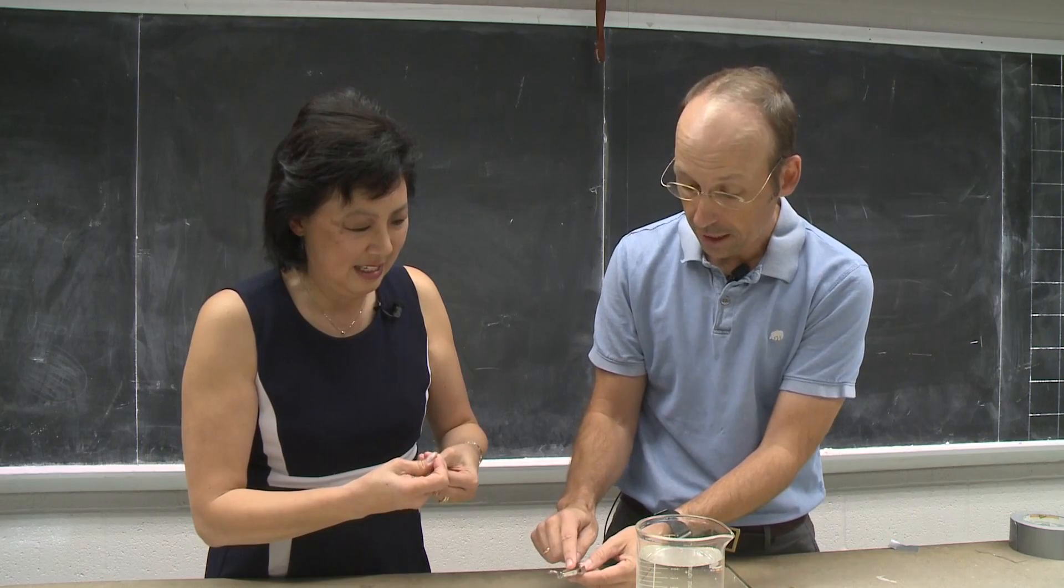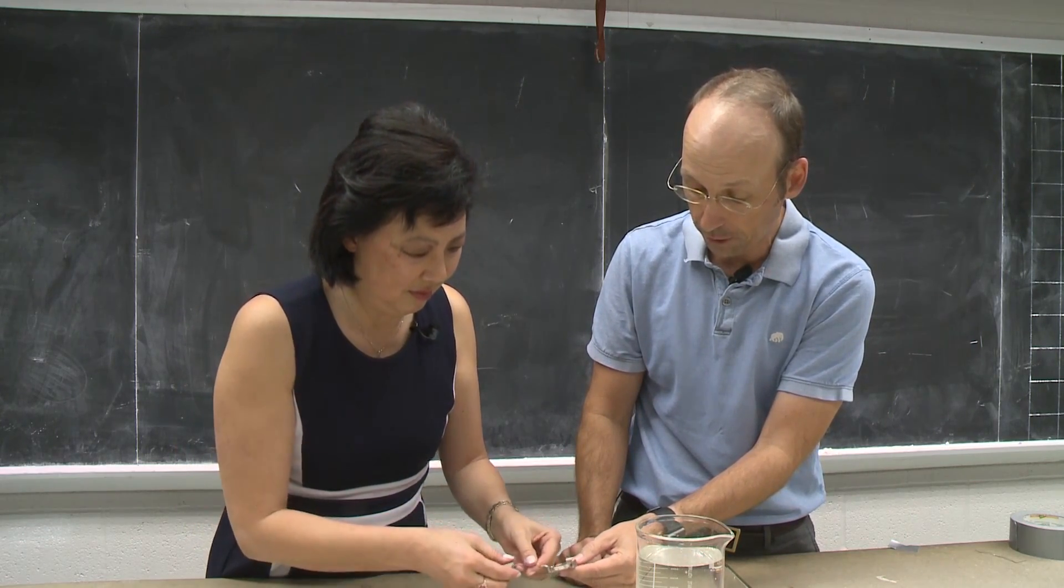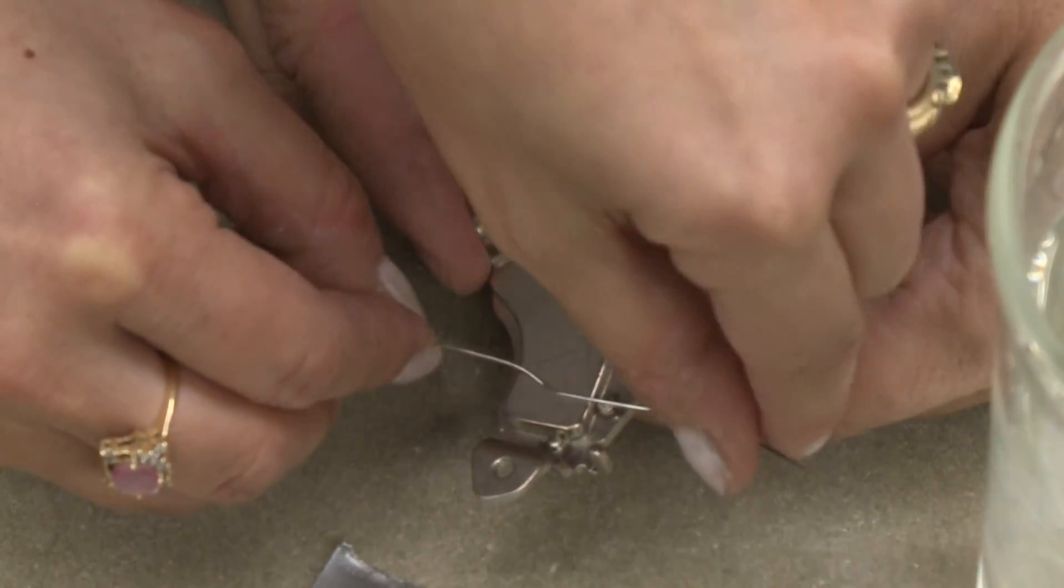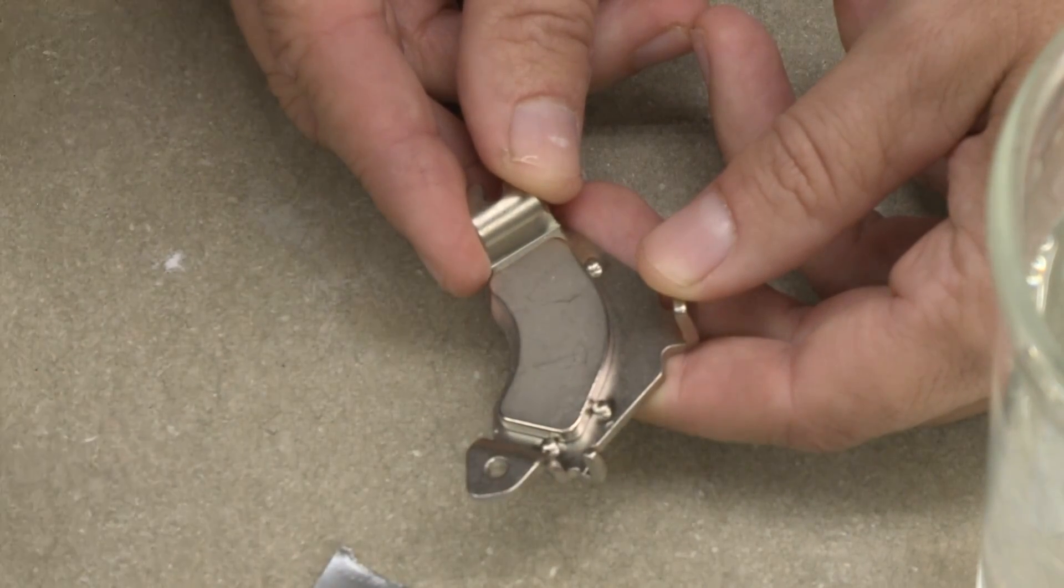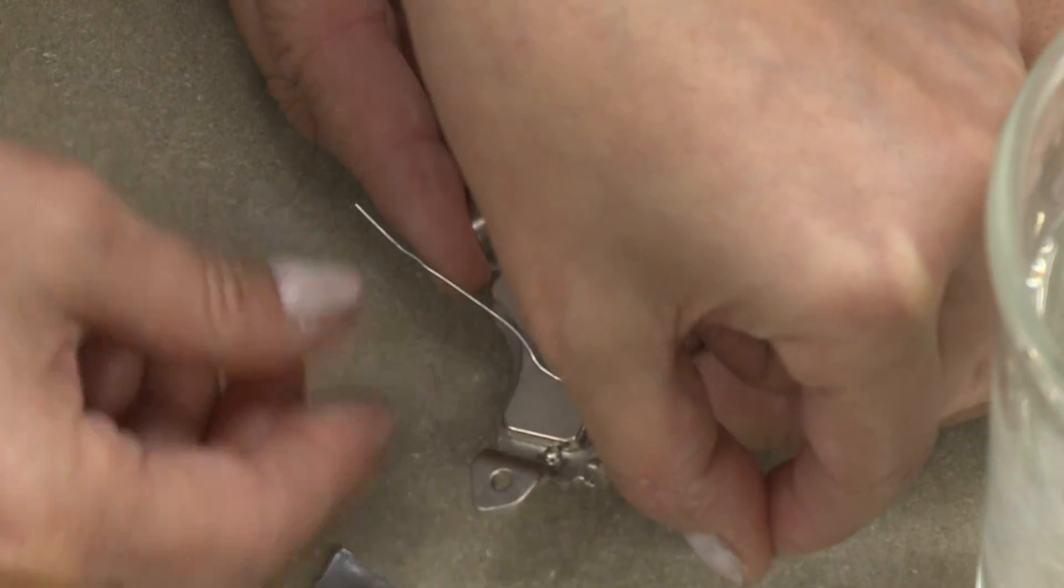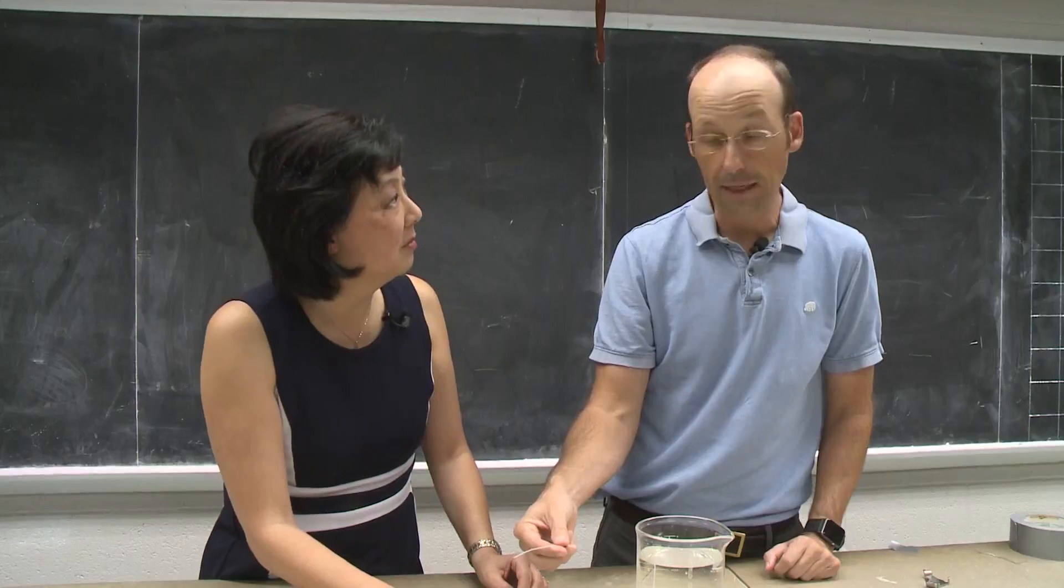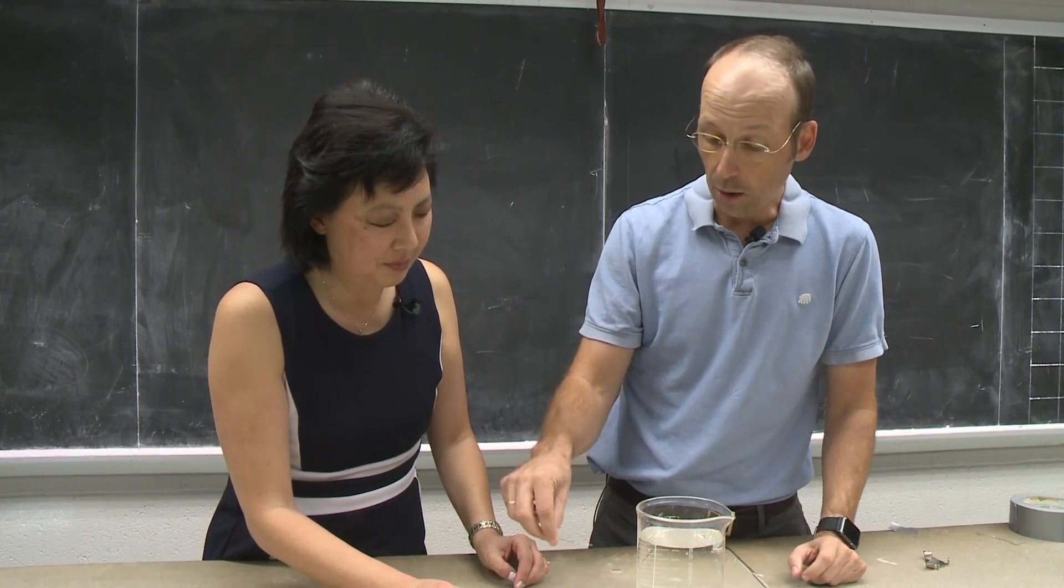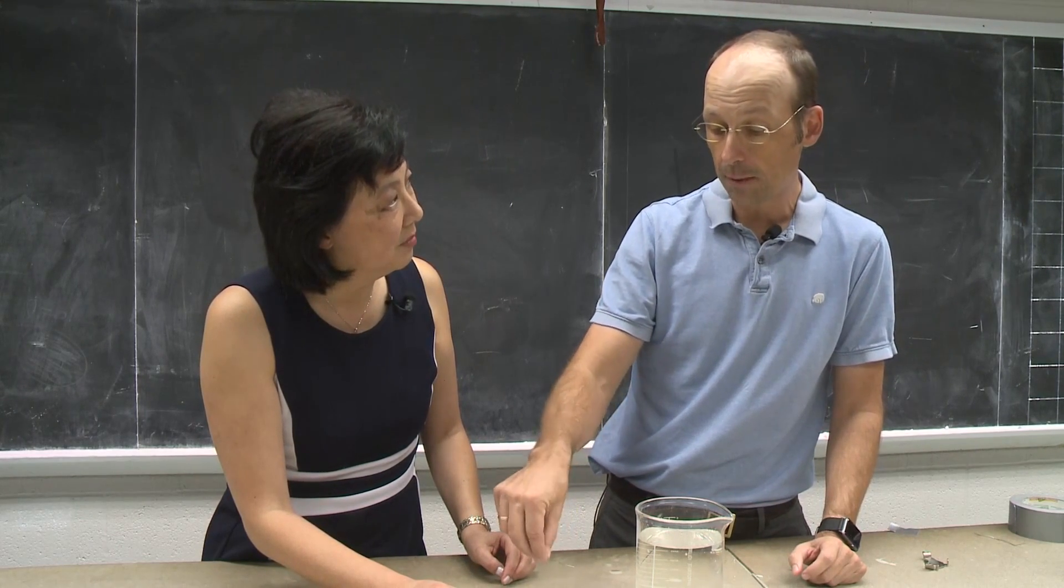So what we're going to do is take this and just rub it the length, slowly rub it the length of the paperclip. There you go. Now push the paperclip all the way through. Keep going all the way and now do it one more time. You want to go the same direction each time. You're aligning these magnetic domains in the paperclip. So now this acts like a magnet. It's not very strong, but it is a magnet.